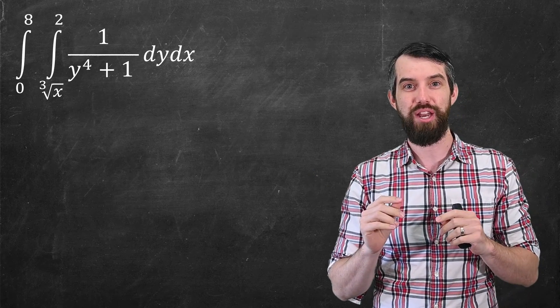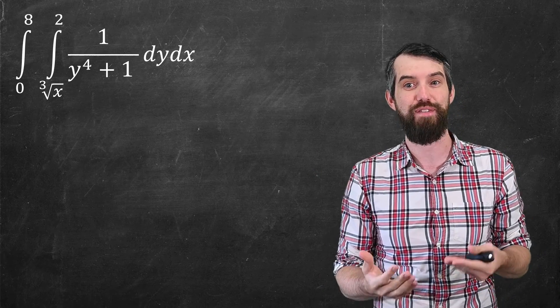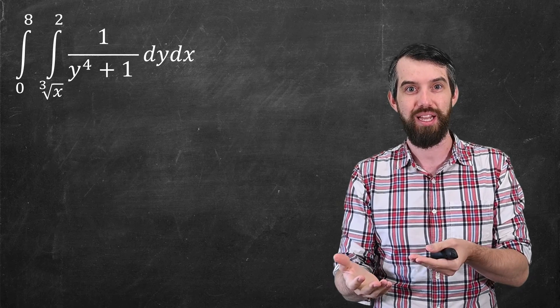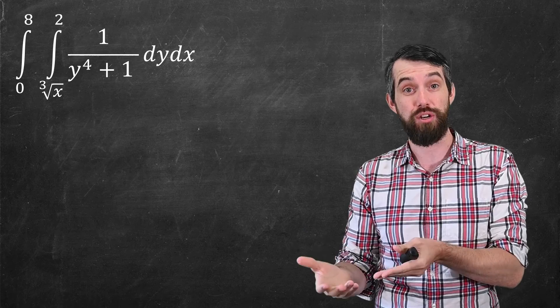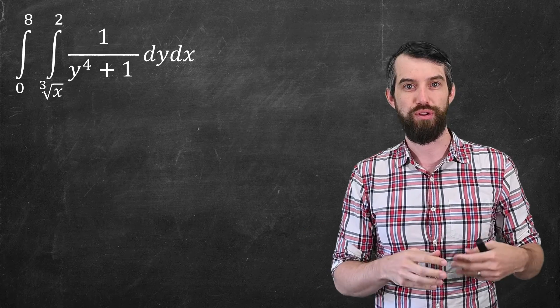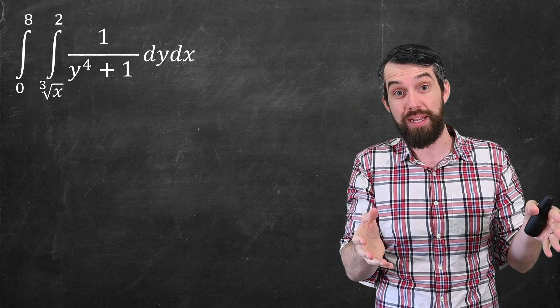The idea is as follows. In this double integral that I have, there is a specific order of integration that is implied by the fact that it says dy dx. That means we're supposed to integrate with respect to y first, and then integrate with respect to x. So there's an inner integral with respect to y, and then an outer integral with respect to x.